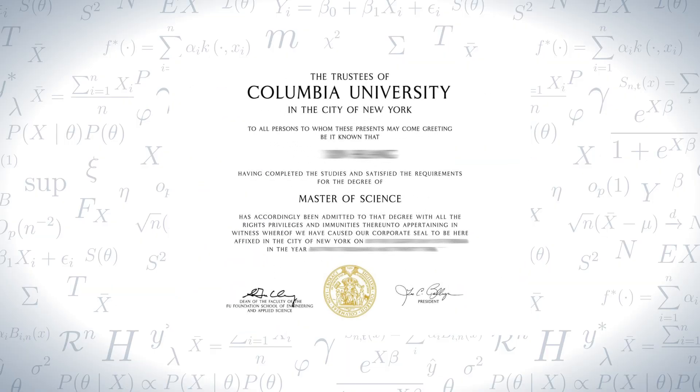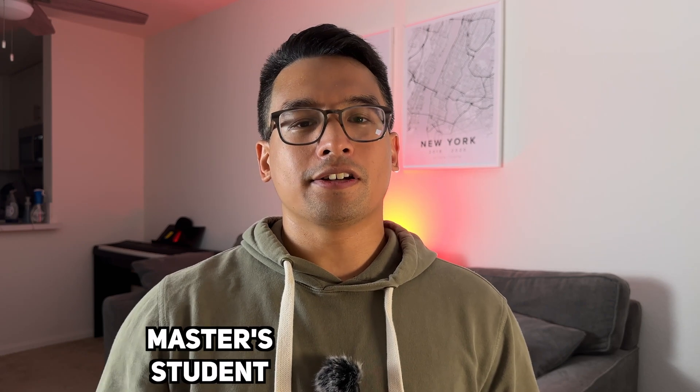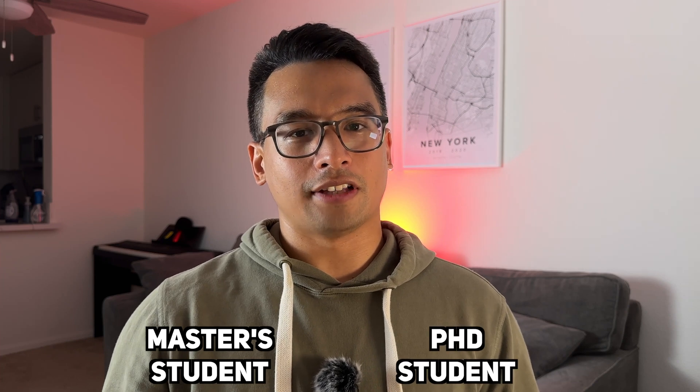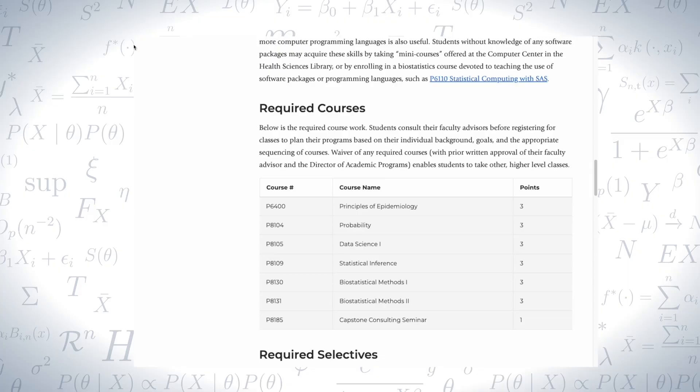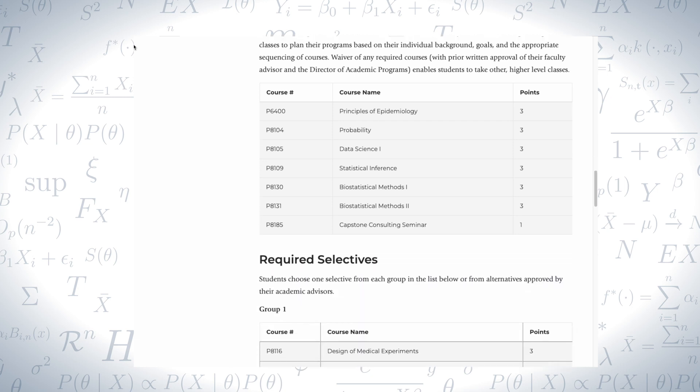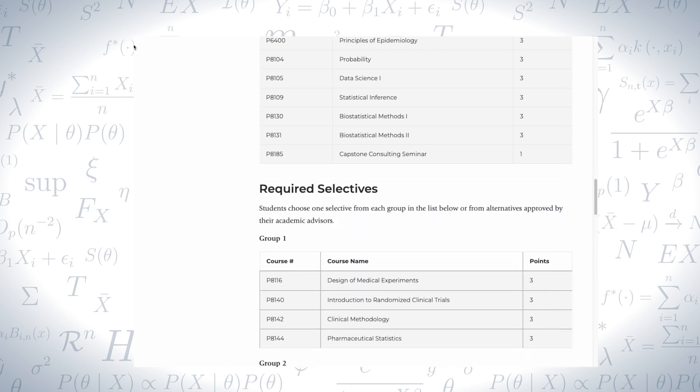For this video, I'll focus specifically on getting into a master's program. I think a master's program is what most people consider when they first think about getting into biostatistics, since most of the time they don't realize it's a thing until after they graduate. I'm in the unique position of having experienced two master's degrees — one for the actual master's degree I went through, and another as a PhD student where I shared classes with master's students.